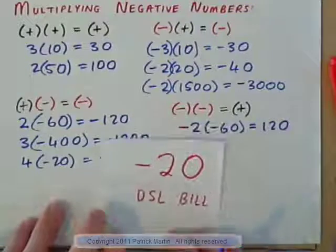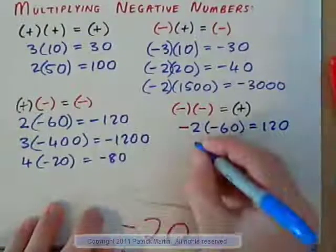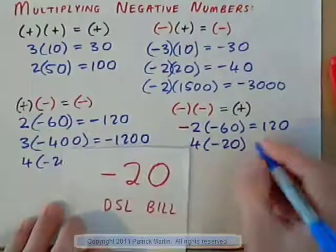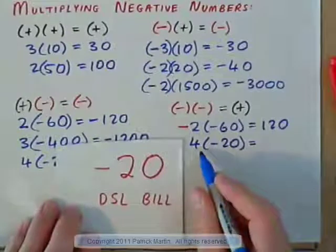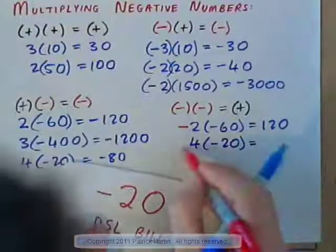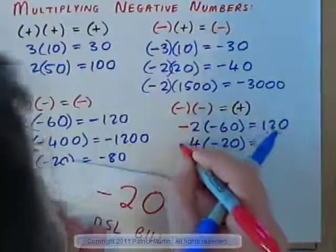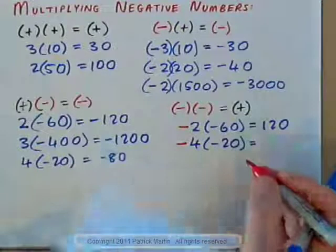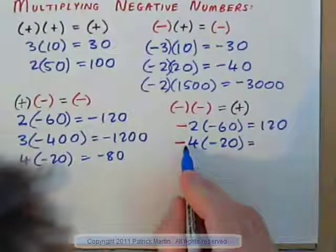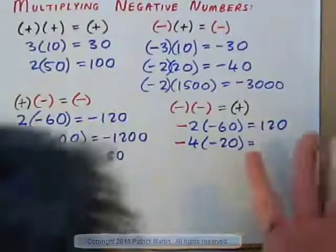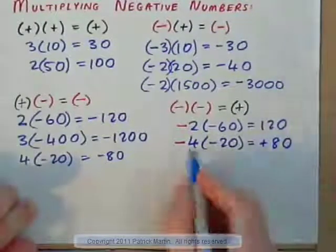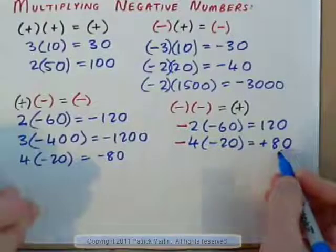If you take away two parking tickets of $60, it's like giving $120 — it's a positive 120. Here's our DSL bill of $20. Here's four DSL bills of $20. Now, we've got four bills — that's negative $80. But if you cancel four DSL bills, take away four DSL bills, how happy are we now? The only way you can take away bills is by giving money — it's like giving $80. So negative four times negative 20 is positive 80.